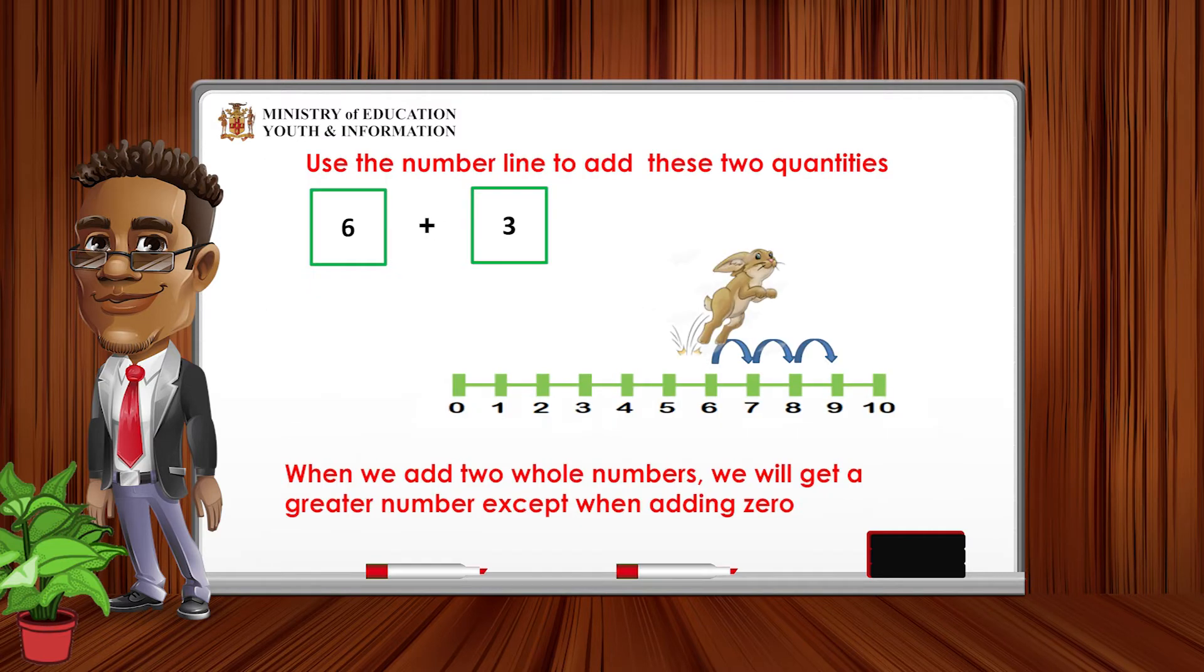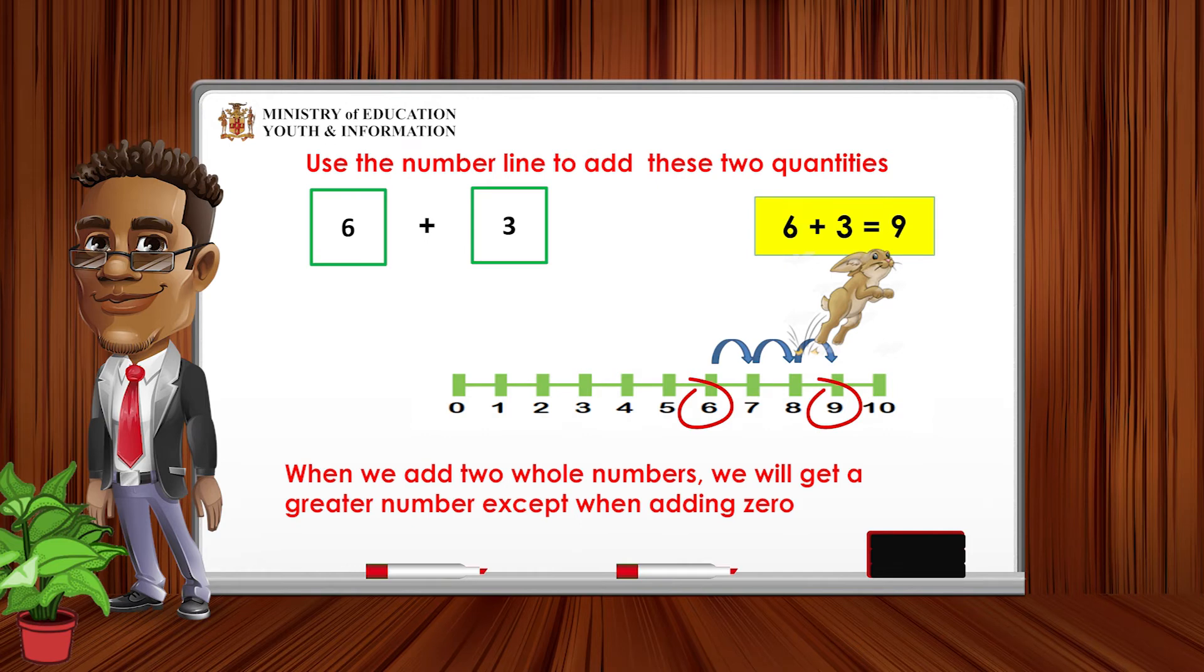Let us use the number line to add these two quantities. 3 added to 6. The first quantity is 6, so let us start there. Then we will jump 3 more places to the right. Which number did the bunny land on? You are correct. The bunny landed on the number 9. So 3 added to 6 equals 9. When we add two whole numbers, the numbers get larger except when adding 0.